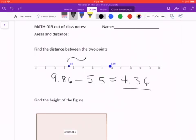And so, again, if we were to measure the distance between those, if we had a ruler or something like that, that distance is 4.36.